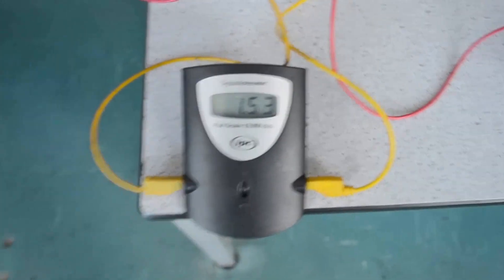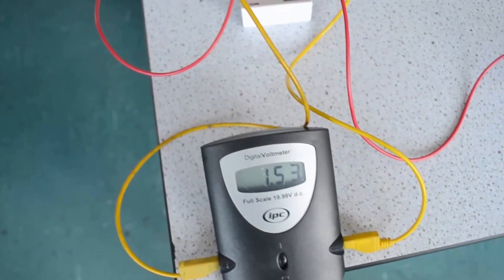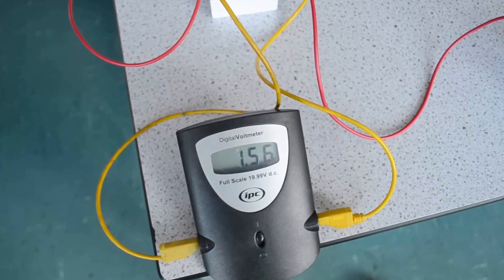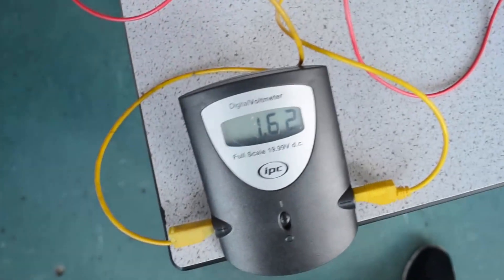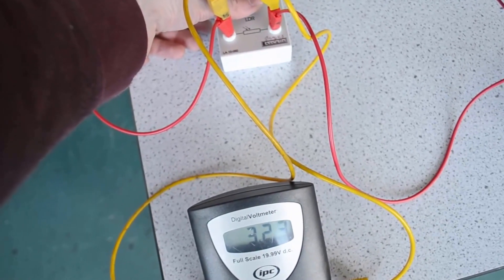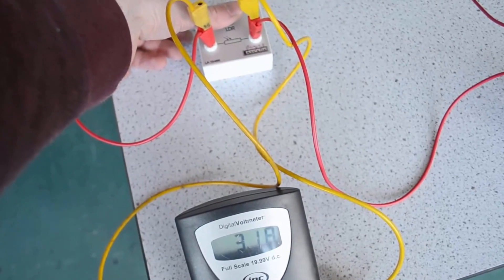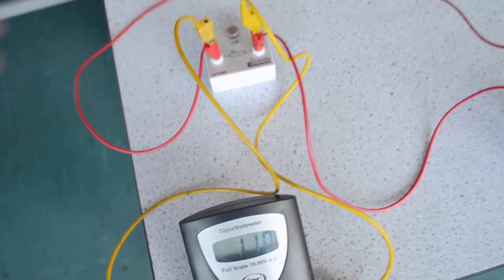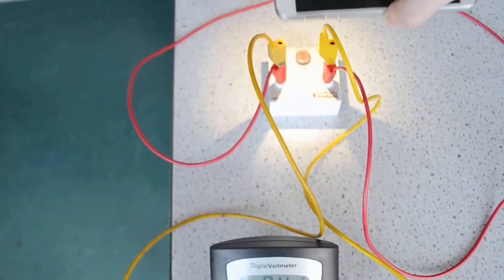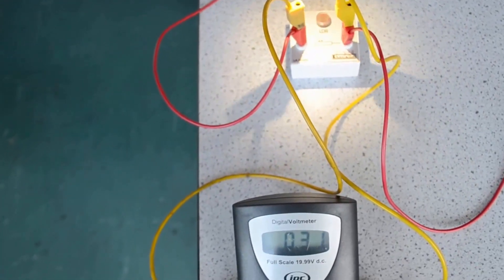As you can see here, with light shining normally on the LDR, it's about 1.5 volts. If I cover up the LDR with my thumb, the resistance increases, and therefore the voltage increases to 3.25 volts. If I shine a bright light on the LDR, the resistance drops, and the voltage drops.